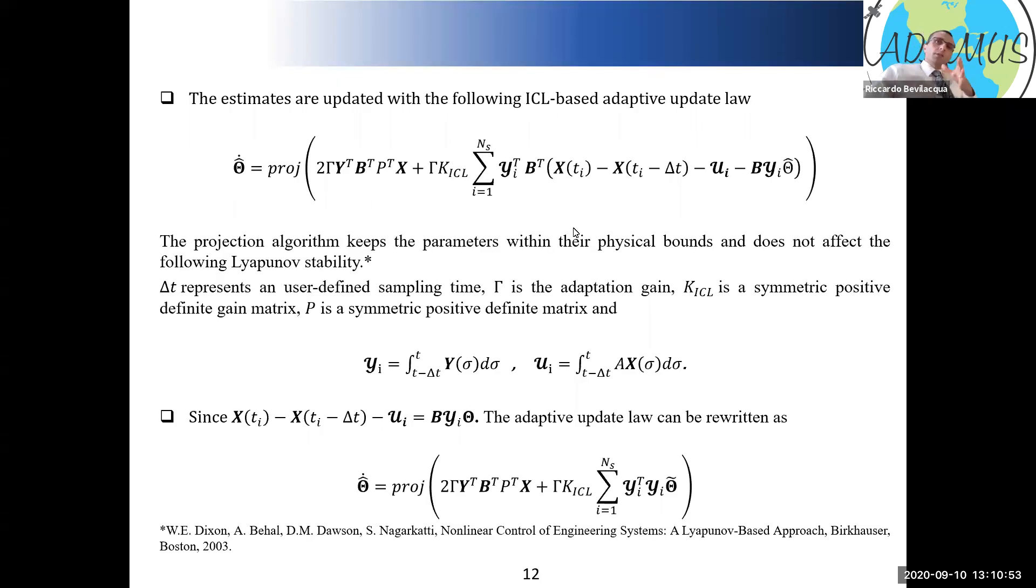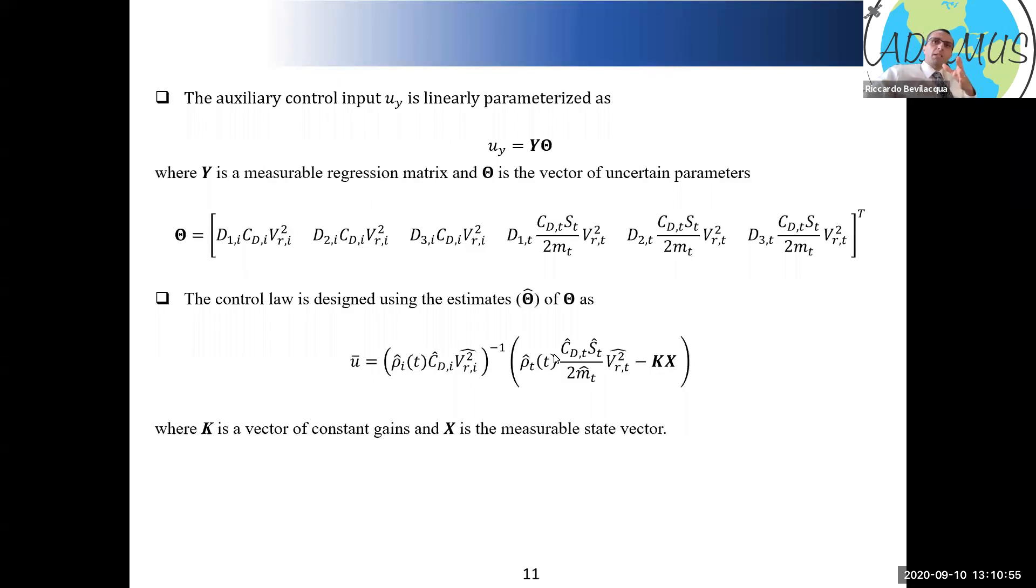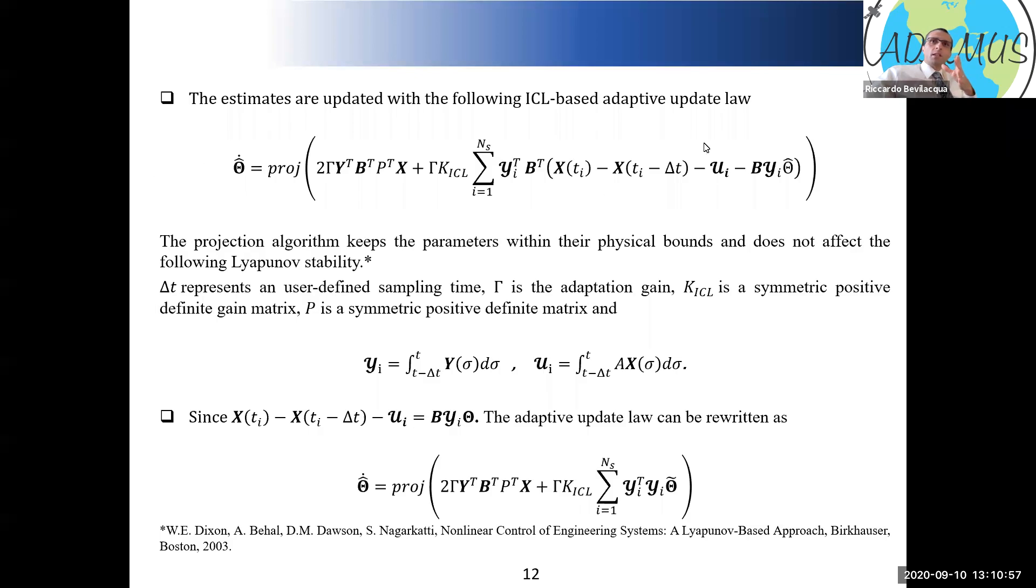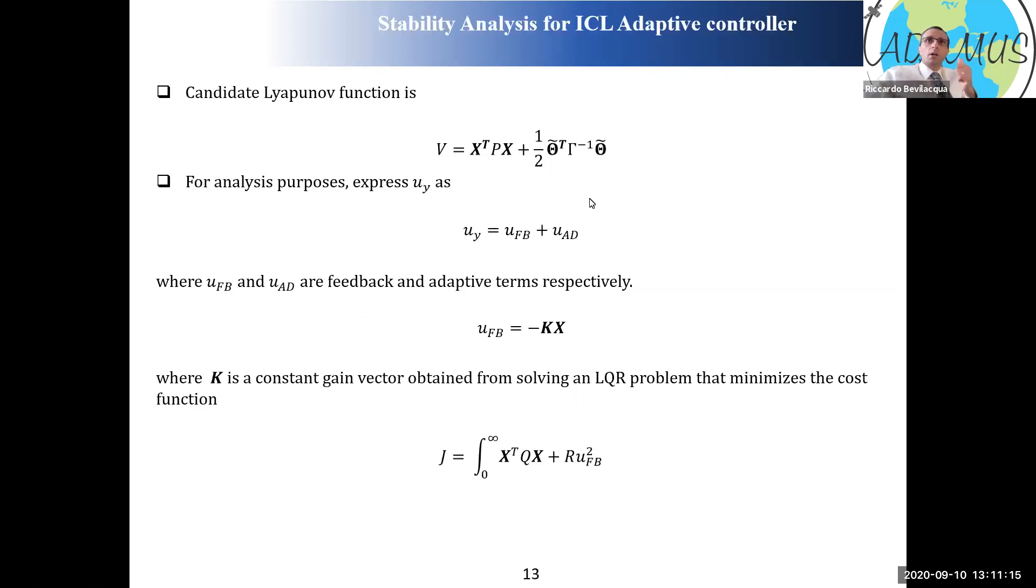One more step from here is using the fact that my dynamics was linear. So I can actually write this equality and simplify or compact my adaptation law with these two terms here, the gradient-based one and the gamma KICL and the summation over a certain number of sample times of the Yi transpose Yi theta tilde. Theta tilde represents the error between the real parameter theta and the estimate theta hat.